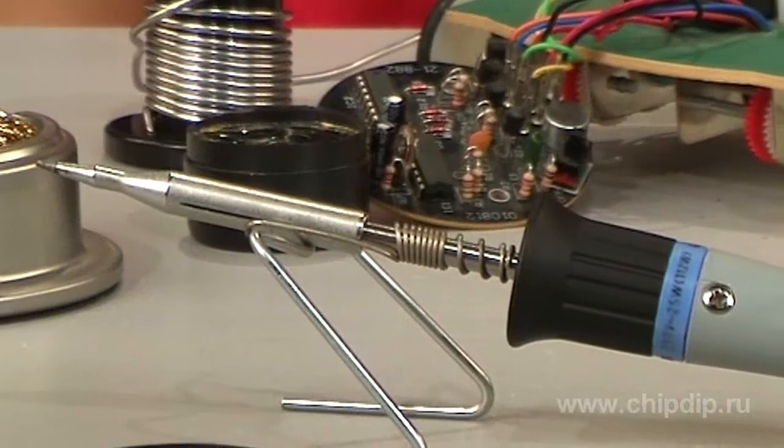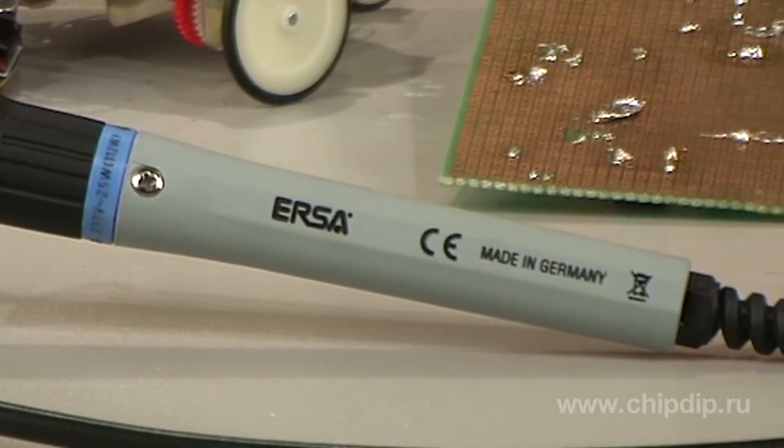The soldering iron weighs only 34 grams without the power cord, so lengthy operations wouldn't be a problem.